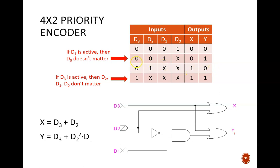Next row up, if the higher inputs are both 0 and d1 equals 1, then the output will be 0, 1. Finally, if d0 is the only input equal to 1, then the output code is 0, 0.